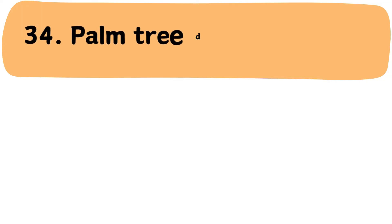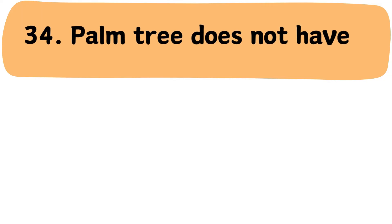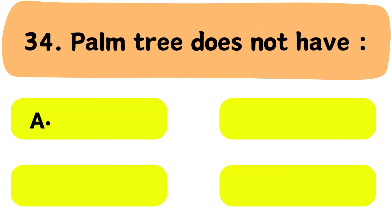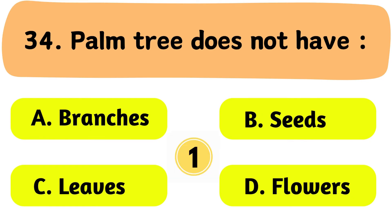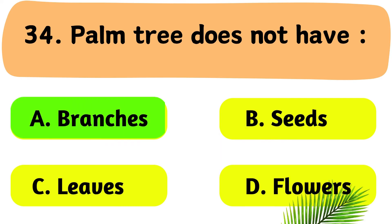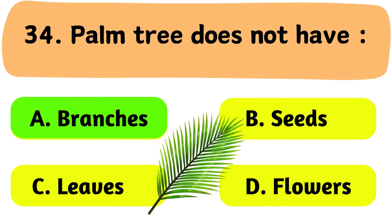Question No. 34: Palm trees do not have what? A. Branches. B. Seeds. C. Leaves. D. Flowers. The correct answer is Option A: Branches.